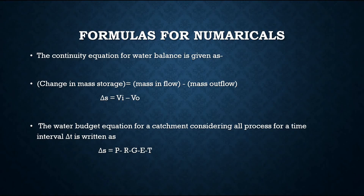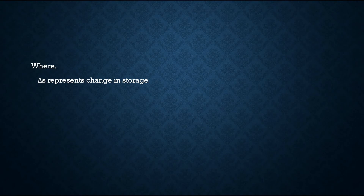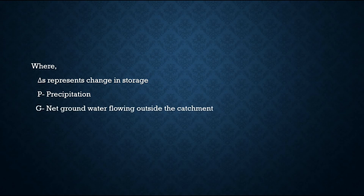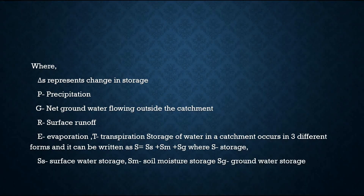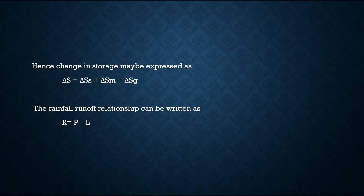The water budget equation for a catchment considering all processes for a time interval Δt is written as: ΔS = P − R − G − E − T, where ΔS represents change in storage, P represents precipitation, G represents net groundwater flowing outside the catchment, R represents surface runoff, E represents evaporation, and T represents transpiration. Storage of water in a catchment occurs in three different forms: S = Ss + Sm + Sg, where Ss represents surface water storage, Sm represents soil moisture storage, and Sg represents groundwater storage. Hence, change in storage may be expressed as ΔS = ΔSs + ΔSm + ΔSg.